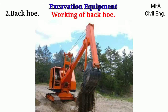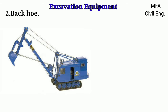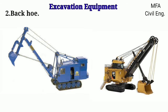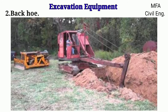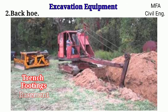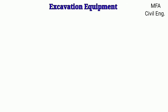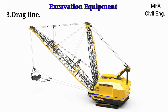The dipper is lifted by raising the boom and then swung to the dumping position. Backhoe is not as efficient as the power shovel. It is the most suitable machine for digging below the machine level, such as trenches, footings, and basements.